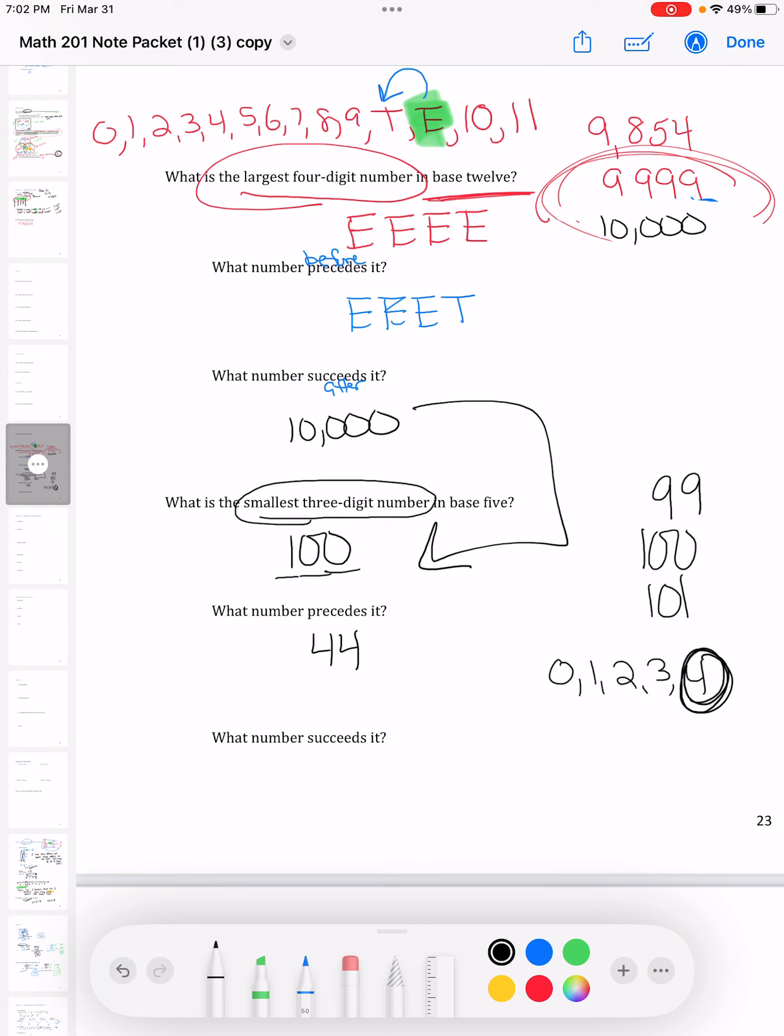Then I'm going to think about what comes after. What comes after 100 is 101. Well, that's going to be the same in base five because I have all those digits: one, zero, and one. That would be the exact same thing in base five.